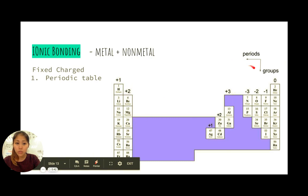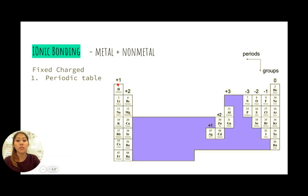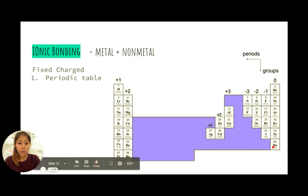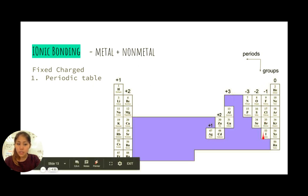Groups with fixed charges include group 1, group 2, group 8, group 7, some of group 6, some of group 5, and some of group 3. Group 1 elements are always +1, meaning they always lose one electron and form a cation. Group 2 elements always lose 2 electrons and form a cation. Group 3 elements typically lose 3 electrons. Group 8 has a full outer shell, so it is neutrally charged. Group 7 has a -1 charge.